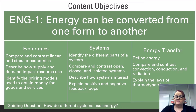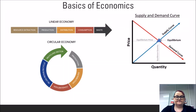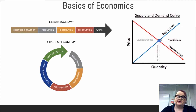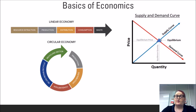This leads us to the guiding question: how do different systems use energy? At this point we've discussed worldviews and the ways in which we look at answering questions about how to use resources. It's important that we also explore how an understanding of economics allows us to make a variety of decisions. Let's begin with a discussion of the two major types of economies: linear and circular.